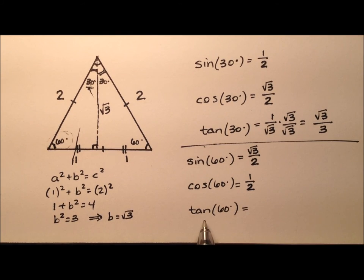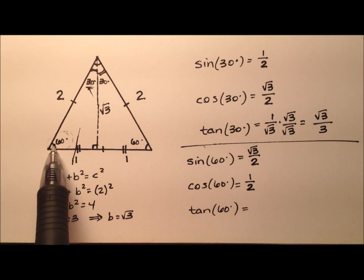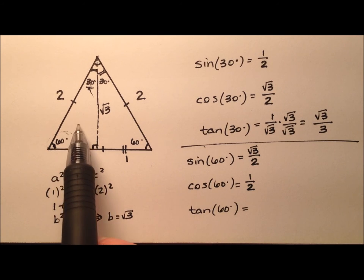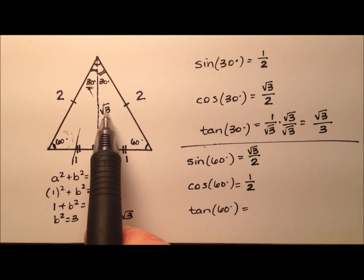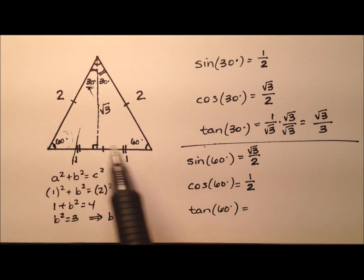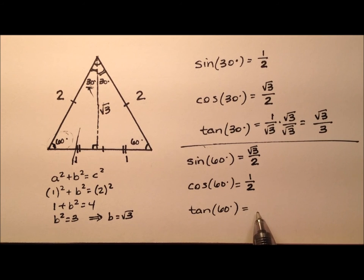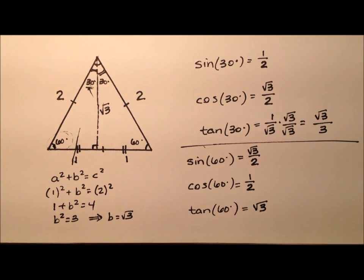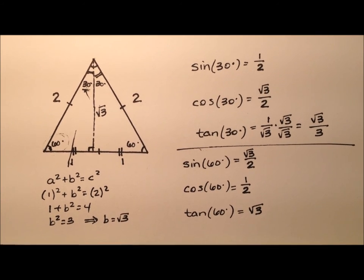Tangent is opposite over adjacent. From 60 degrees, the opposite is the square root of three and the adjacent is one. So the square root of three over one, which we can just write as the square root of three.